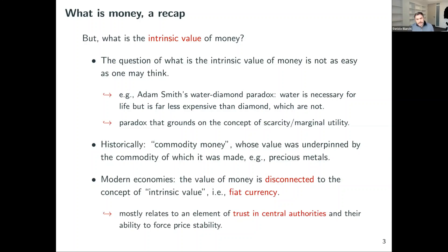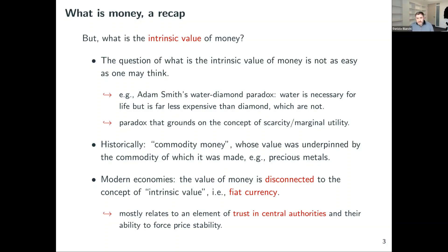This disconnection gave rise to fiat currencies, which are a relatively new invention compared to commodity money. The value of fiat currencies is built upon trust in central authorities and their ability to guarantee price stability. I'll clarify what we mean by central authorities and price stability in the next slides.